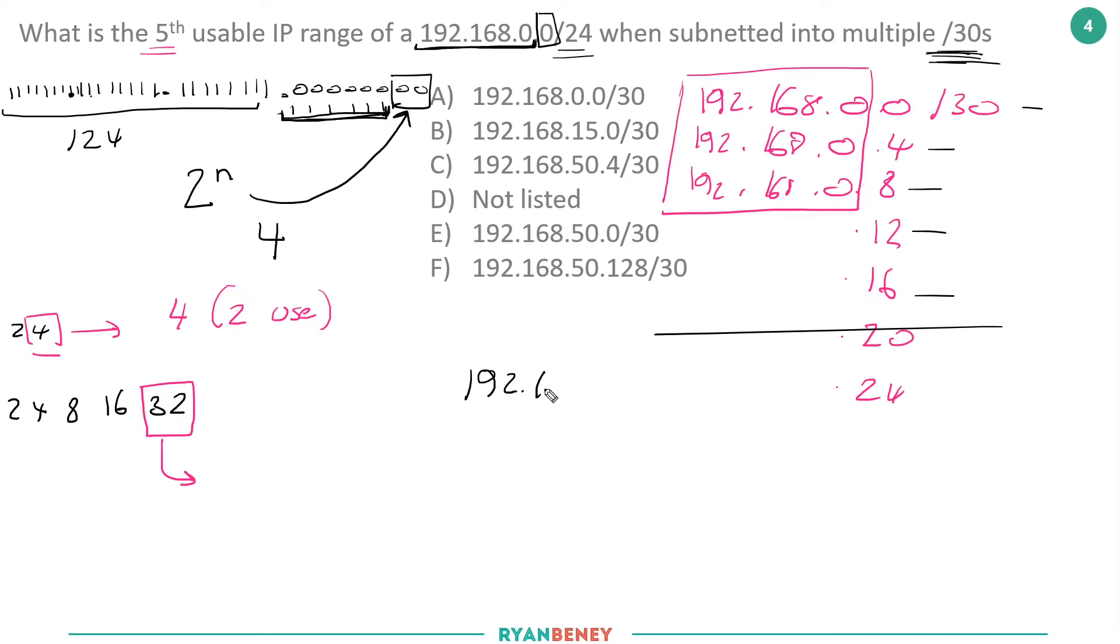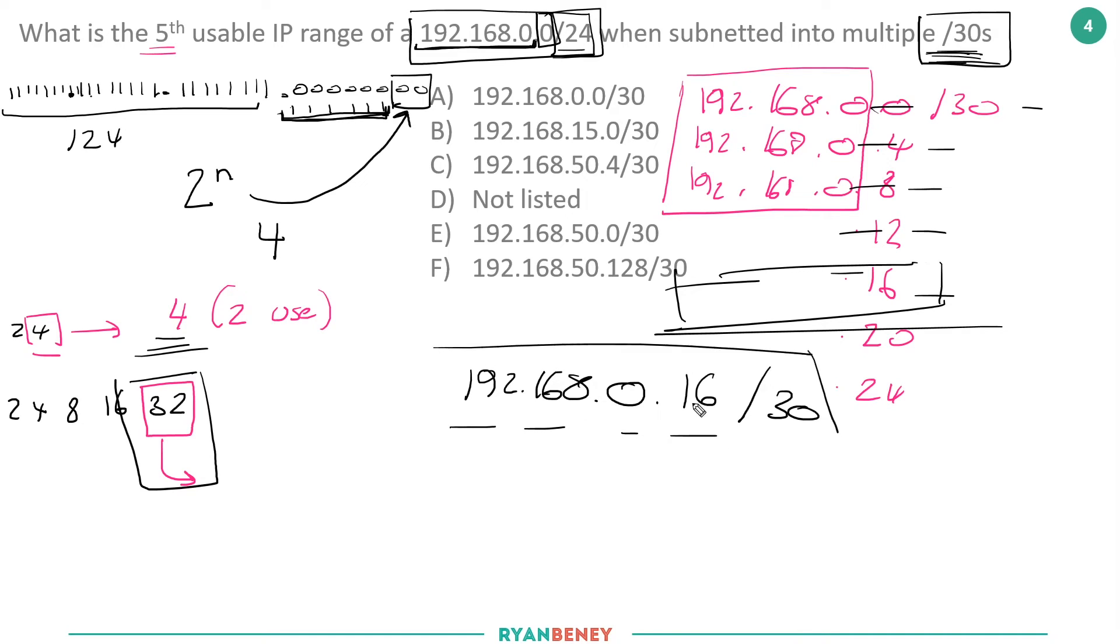Notice these 24 bits don't change at all; it's only the last octet, and we're just simply adding 4 to the number each time until we get to the fifth usable IP range. If we do the maths now, this is the first, second, third, fourth, fifth. So the actual answer is 192.168.0.16/30. This is the fifth range when we take that /24 and break it into /30s, which are 4 IPs per subnet, giving us a total of 32 subnets inside that /24. The fifth one down is 192.168.0.16/30, so our real answer is D because the fifth subnet is not listed here.